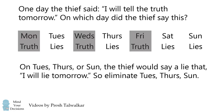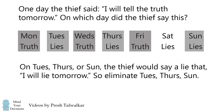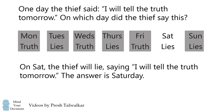What about Tuesday, Thursday, or Sunday? On those days, the thief lies and has to say a lie that 'I will lie tomorrow.' So, again, we can eliminate these possibilities. That only leaves Saturday. On Saturday, the thief lies, and the thief is actually going to lie the next day on Sunday. So the thief will, in fact, lie and say 'I will tell the truth tomorrow.' The answer is Saturday.